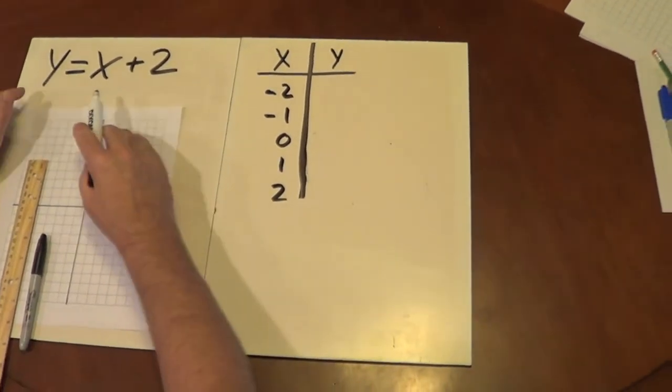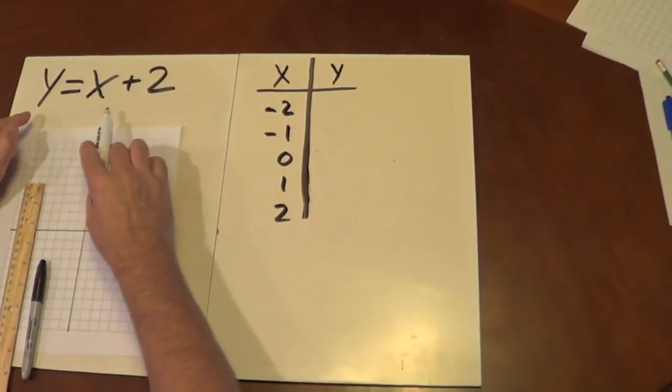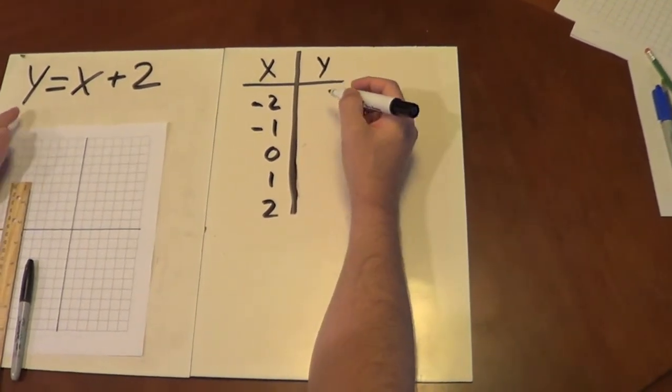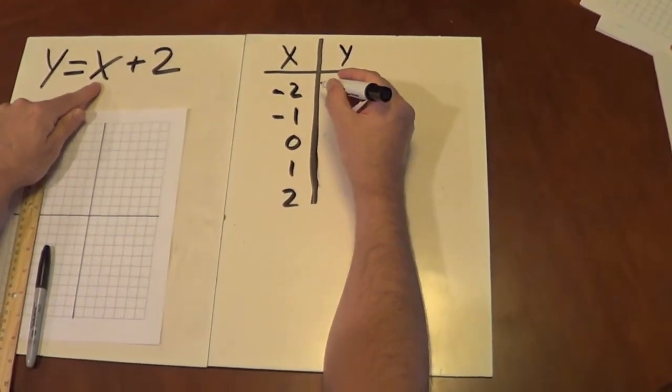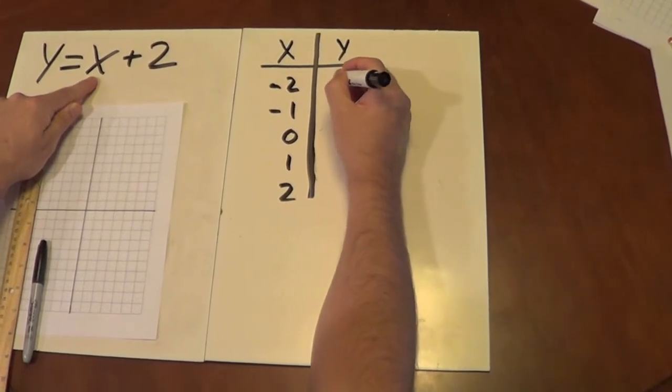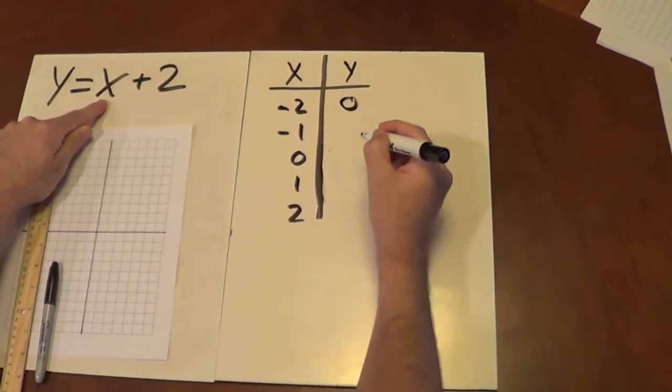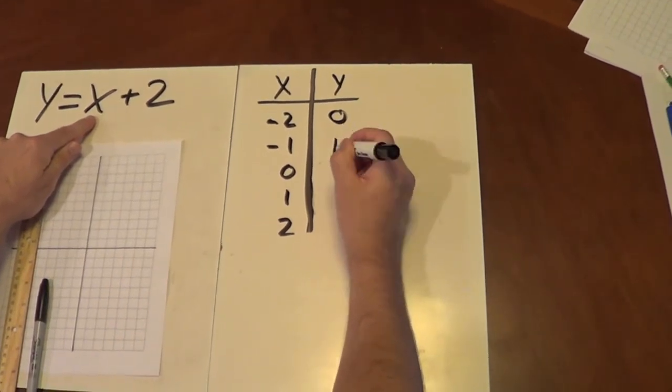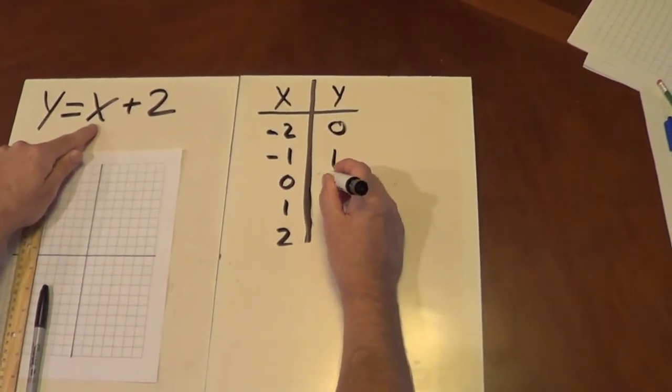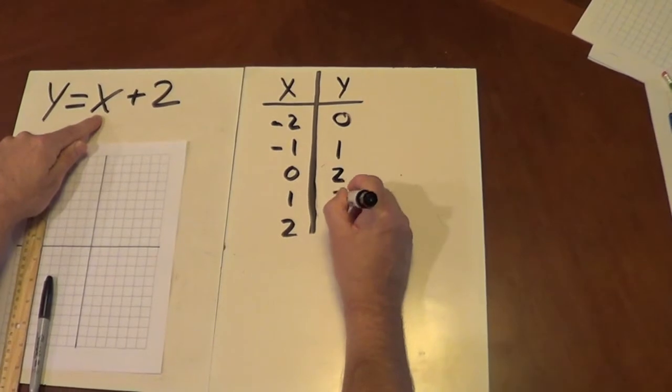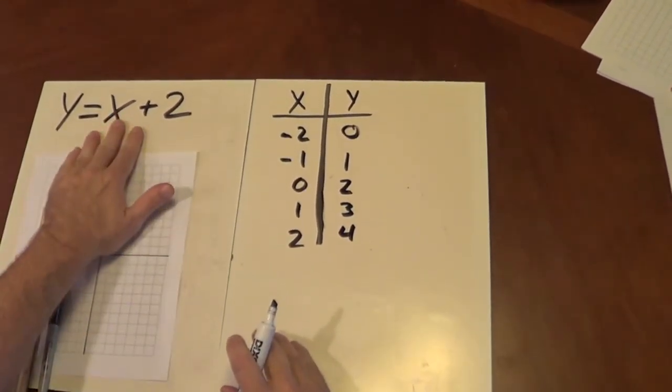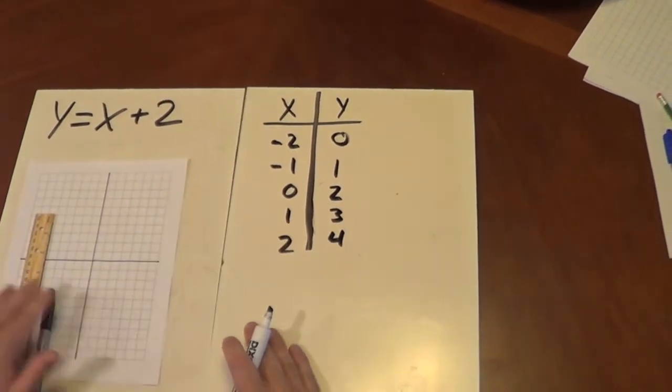Okay, in this example, we're going to start with the equation of y equals x plus 2. And we're going to make a table. So if x is negative 2, y is 0. If x is negative 1, y is 1. If x is 0, y is 2. And you can see the pattern, 3, 4. Now, we've got an equation. We've got a table. Now we're going to graph it.